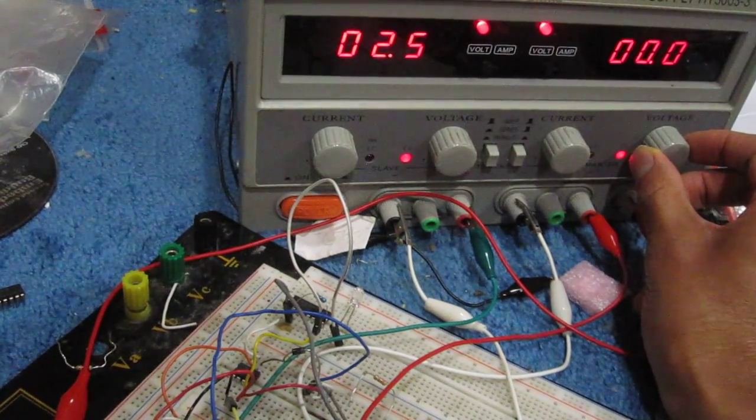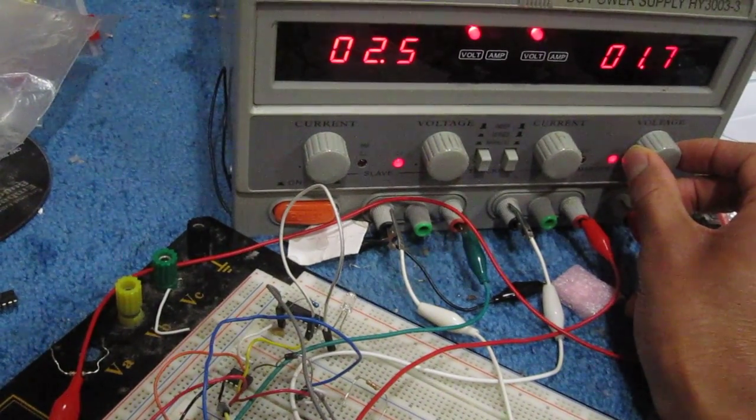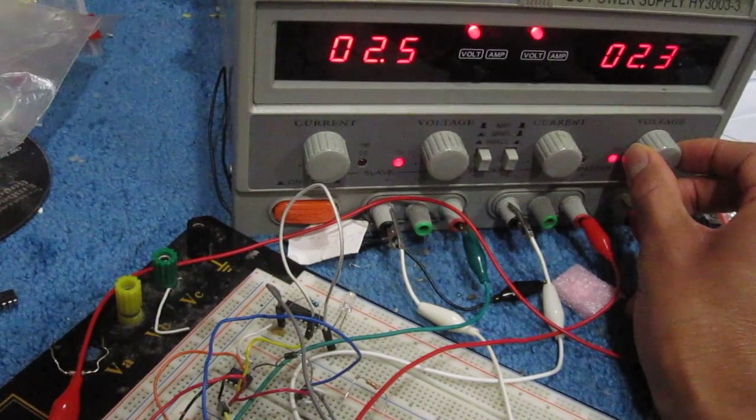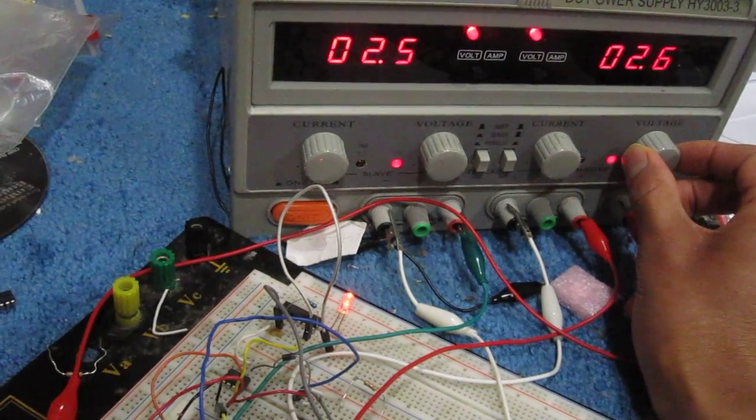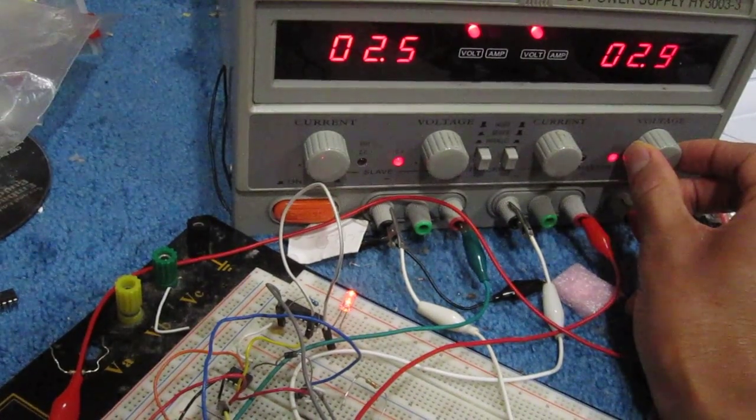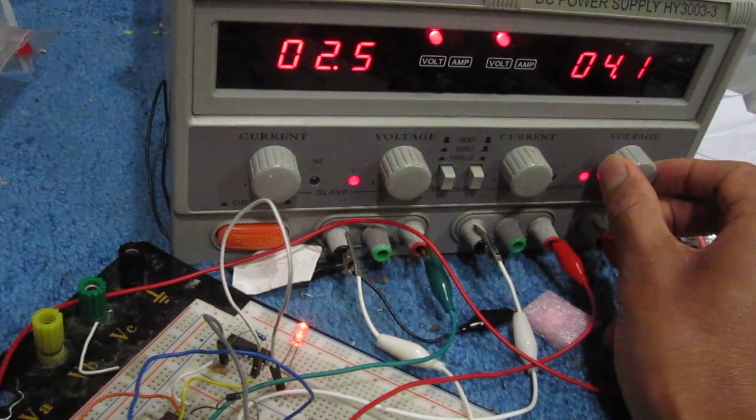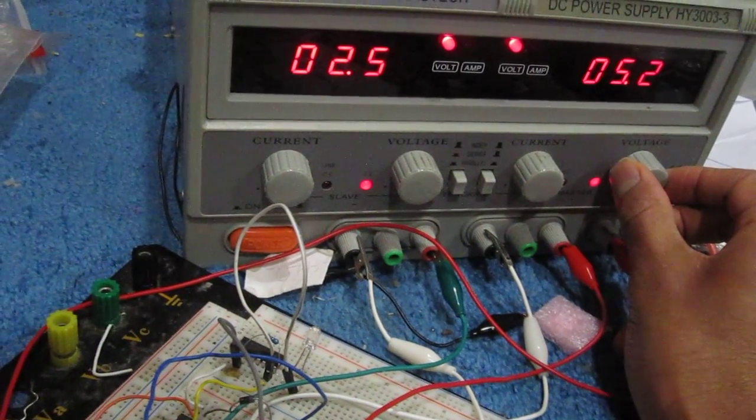It'll turn on when it reaches that window voltage reference range of 2.5 to 5 volts. Right now it's 2.3, and right there it turns on—the LED's on. And you see at above 5 volts it shuts off.